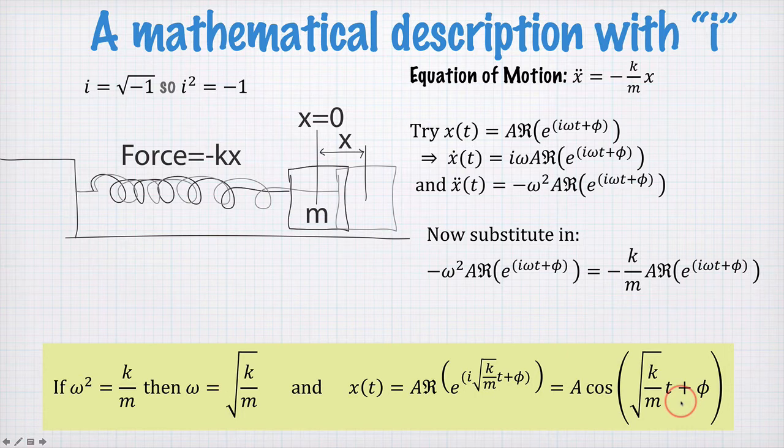So it seems like we haven't really gone anywhere except rounded in a circle. All we've done is written the cosine function as the real part of all this stuff here. So it's a bit of a strange thing to do.